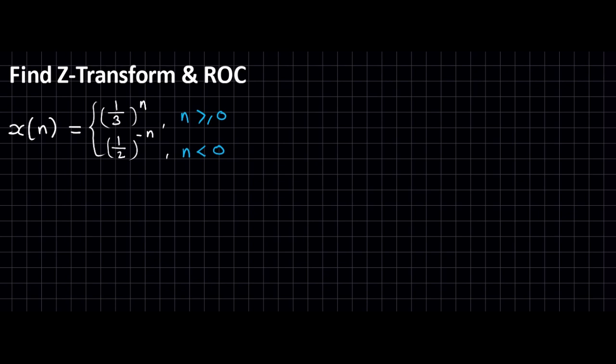This sequence is x(n) equal to 1 over 3 raised to plus n. The first case has summation limit 0 to infinity. The second case has summation limit minus infinity to minus 1 — it is not equal to 0, it is less than 0, so it is on the left side.